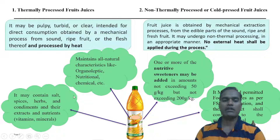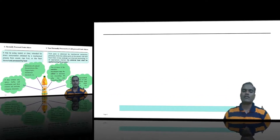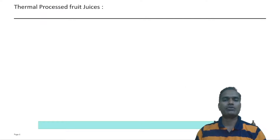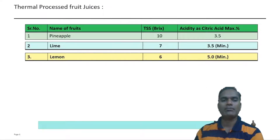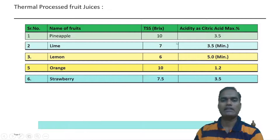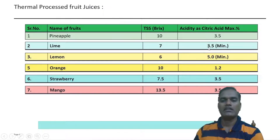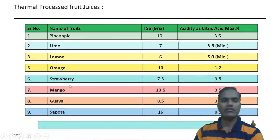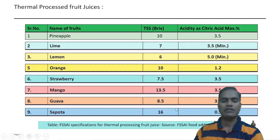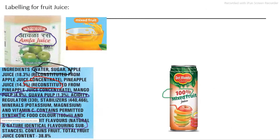As per our requirement, we can add these ingredients as per the regulations to maintain the specific standard of the final product. For thermal processing fruit juices — that is the RTS beverages — the minimum requirement for the Brix and acid level are specified. These are the examples showing the fruit juice minimum requirement of Brix and acid level as per the Food Safety Standard Authority of India.